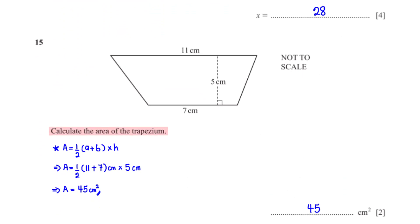Calculate the area of the trapezium. Here is the formula for the area of a trapezium. a is 11 cm, b is 7 cm, and h is 5 cm. When we type this into the calculator, we get 45 cm squared.